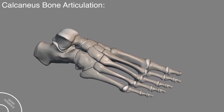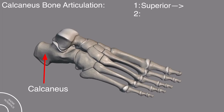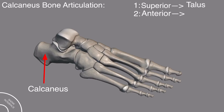Now, the calcaneus bone has two articulations. Superiorly, it articulates with the talus bone, as you can see here. And anteriorly, it articulates with the cuboid bone.